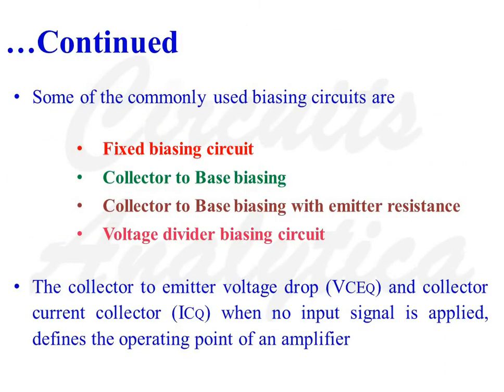In this session, we will be discussing some of the commonly used biasing circuits. These are: the fixed biasing circuit, the collector-to-base biasing circuit, the collector-to-base biasing circuit with emitter resistance, and the voltage divider biasing circuit with emitter resistance.